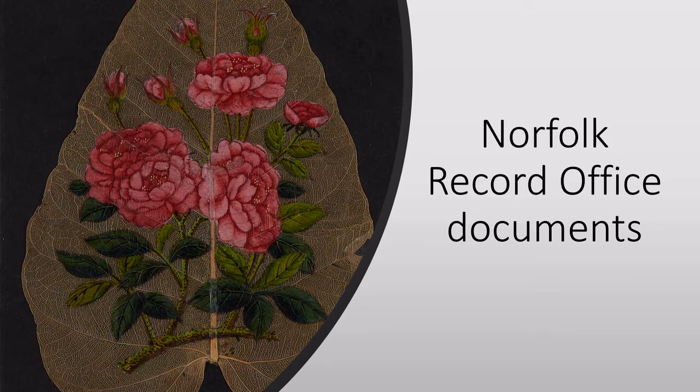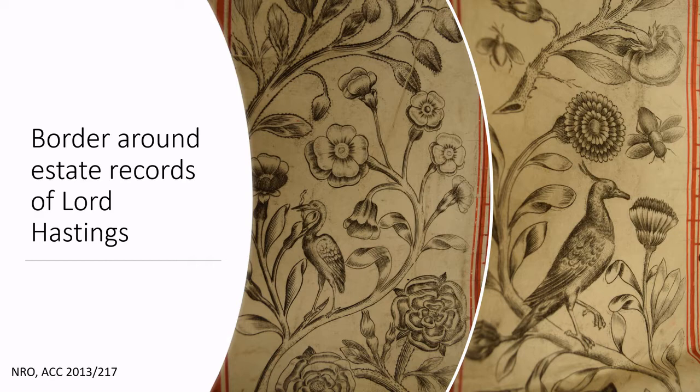Here are some examples of documents from the Norfolk Record Office which have inspired this activity. These pictures provide a highly decorative border to some estate records of Lord Hastings. They include intricate drawings of birds, insects, flowers and plants.